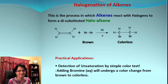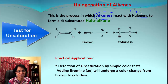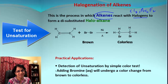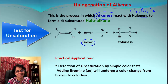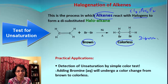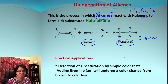The next one is halogenation of alkenes. In this reaction, alkenes react with halogens like chlorine, bromine, or fluorine. The reaction is shown here with bromine. When bromine reacts, since bromine has a brown color, it forms a dibromo compound which is colorless — so the brown color disappears.